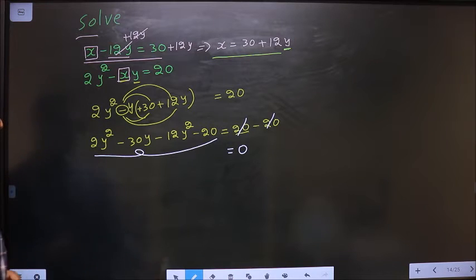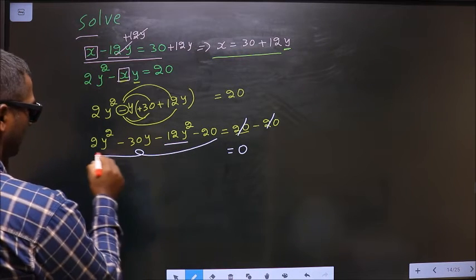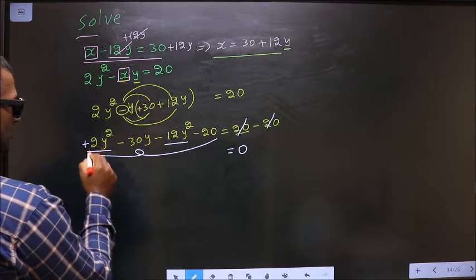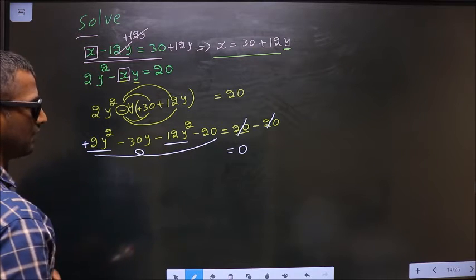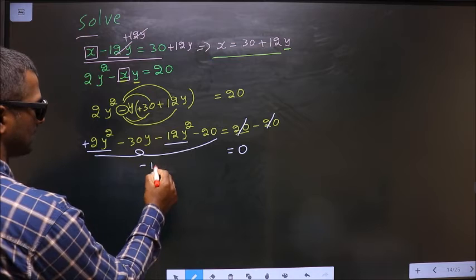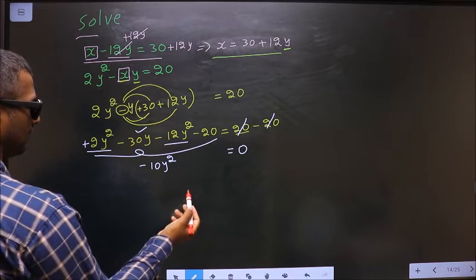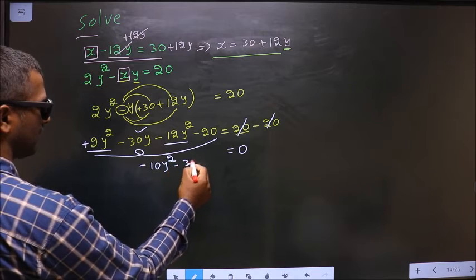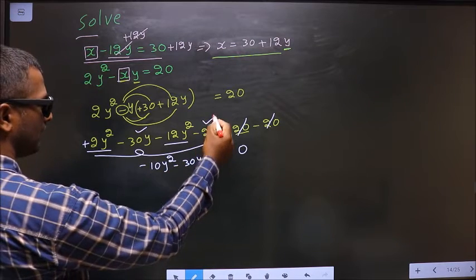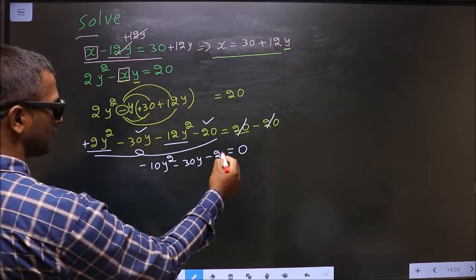Starting with y square. Here it is plus 2y square. Here it is minus 12y square. So that will result in minus 10y square. I have only one y term that is minus 30y. Only one constant that is minus 20.